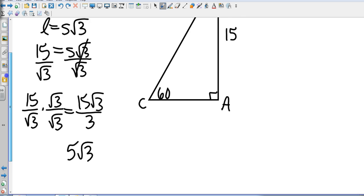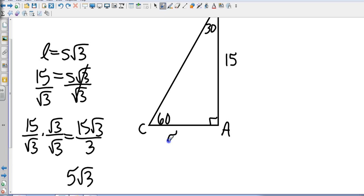And so that's going to be 5 square roots of 3. So our smallest side is 5 square roots of 3, because that's S. And then since our hypotenuse is 2 times that, that's going to be 5 square roots of 3 times 2, which is 10 square roots of 3. So our missing sides are 5 square roots of 3 and 10 square roots of 3.